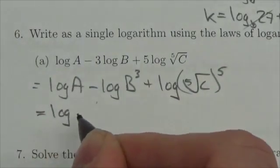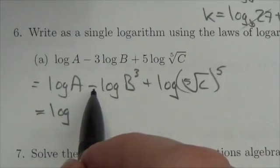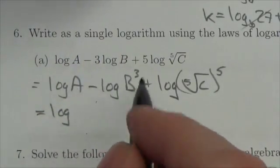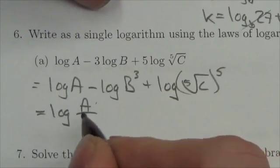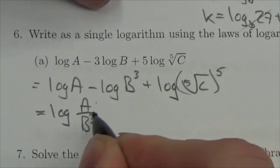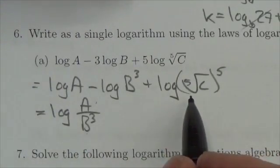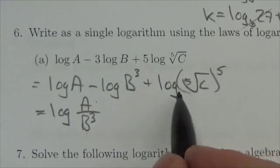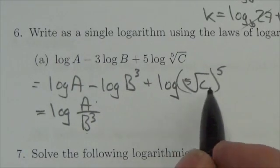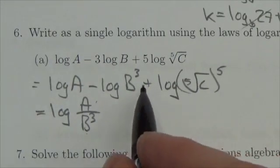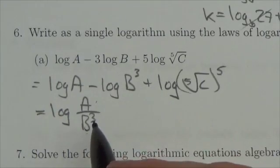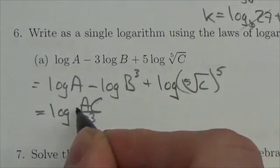So this is the log, common log, of A minus B means A over B³ plus C, because remember though the fifth root of C to the fifth is gonna cancel, this is gonna be just C. But this is multiplication, so if I multiply this by C that C is going to go in the numerator.